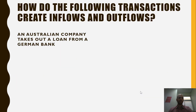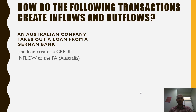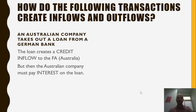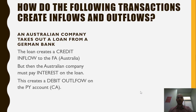An Australian company takes out a loan from a German bank. The loan creates a credit inflow to Australia, which is recorded in the financial account under loans — so the money goes into Australia. But then the Australian company has to pay interest on the loan, which creates a debit outflow on the primary income account, which is on the current account. So an inflow to the financial account will result in an outflow from the current account.